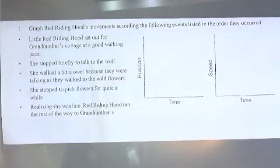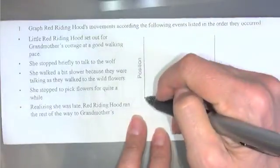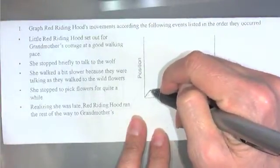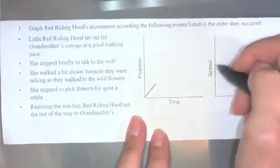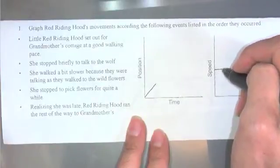Little Red Riding Hood set out for Grandmother's Cottage at a good walking pace. She started from zero at a good walking pace. That means time and position is going to increase, and that means we've got an intermediate speed going here.